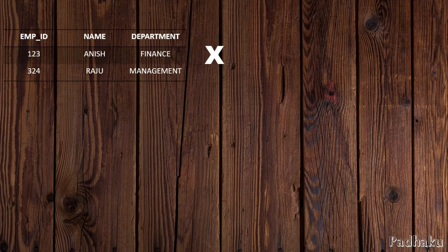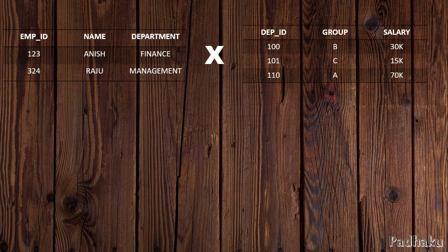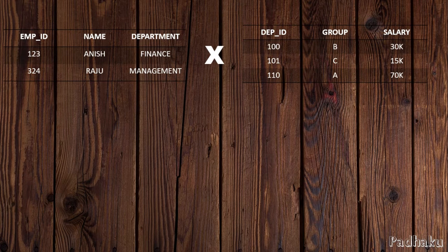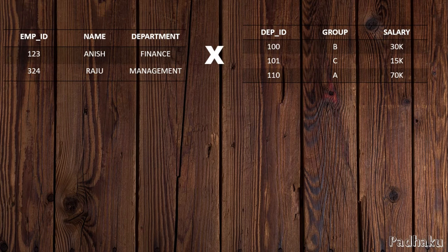Now there is a task for you. This is Table 1 and this is Table 2. You are going to find the cardinality and degree of all three tables — the first one, the second one, and the table you get after the Cartesian product. Join our Telegram and WhatsApp group linked in the description. Thank you so much, see you in the next video, bye bye.